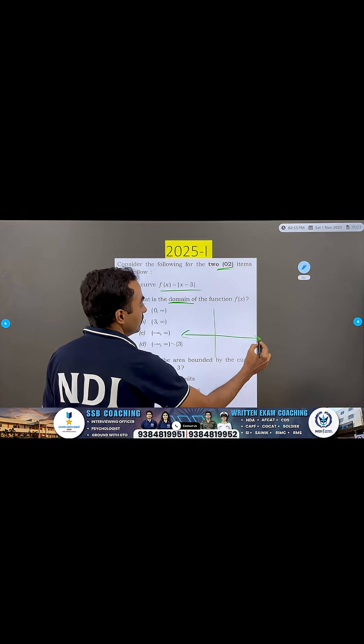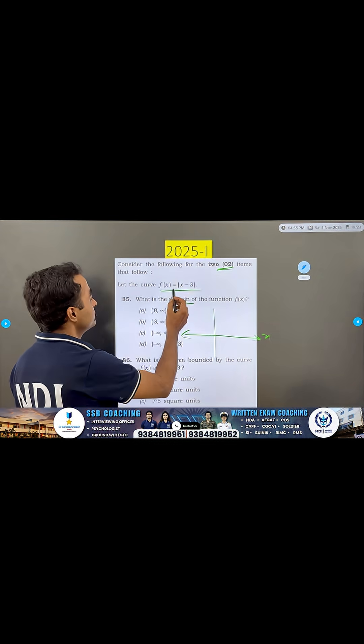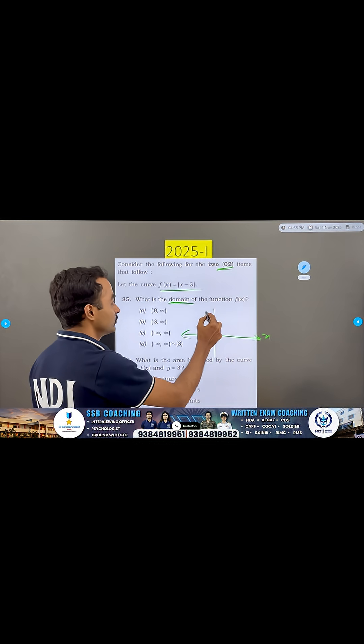X-axis, right? Domain is what? X-axis. X-axis is what a value. Now, you see this graph of this function. Modulus function is smooth.